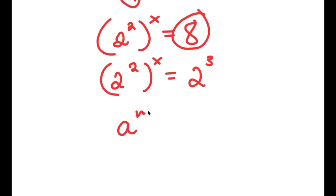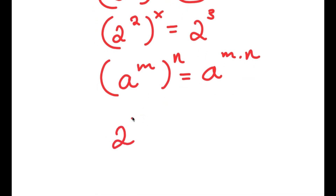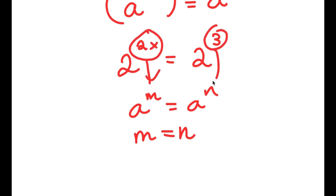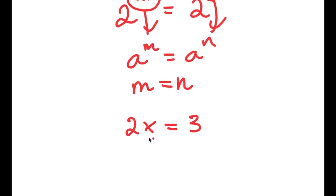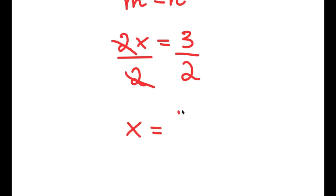If I have something in the form a to the power of m to the power of n, this is equal to a to the power of m times n. So 2 to the power of 2 to the power of x equals 2 to the power of 2x. Now if a to the power of m equals a to the power of n, then m equals n, meaning 2x equals 3. Dividing both sides by 2, I get x is equal to 3 over 2.